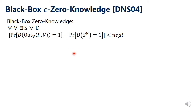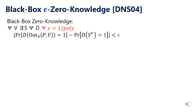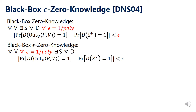Now I'd like to explain what epsilon zero-knowledge is. Recall the standard zero-knowledge property: black-box zero-knowledge says the difference between these two probabilities is upper-bounded by a negligible function, which is equivalent to saying that for any inverse polynomial epsilon, this is upper-bounded by epsilon. Epsilon zero-knowledge is obtained by slightly changing the order of quantifiers — epsilon comes before the simulator S.